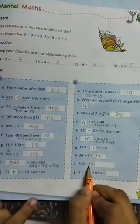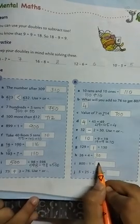800 minus 1, the number that comes before 800 is 799.